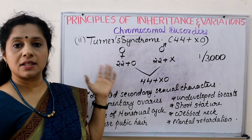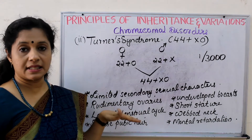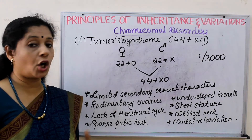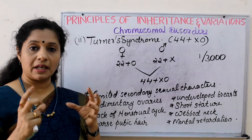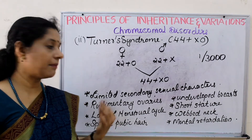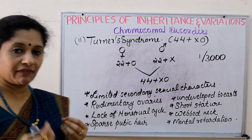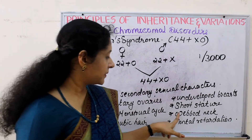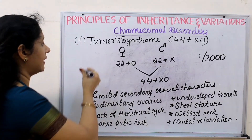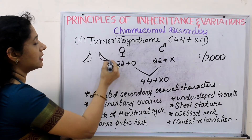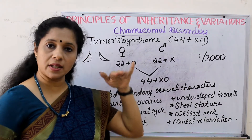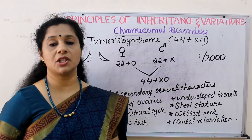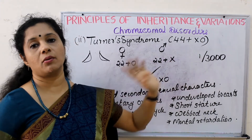This was reported by Turner, and that is why it is named after him. The characteristics of this disease include limited secondary sexual characters — the feminine features are less and reproductive-related organs are not well developed. Then rudimentary ovaries — the ovaries are not well developed or functional. Since ovaries are not functional, the menstrual cycle is also absent. Their pubic hair is also sparse or very less. Then underdeveloped breasts — mammary glands also don't develop. Then webbed neck — these people may have a skin fold making a webbed neck. They are short statured and have mental retardation also.